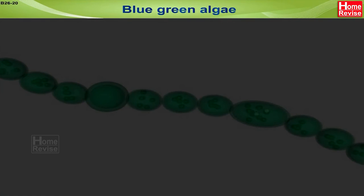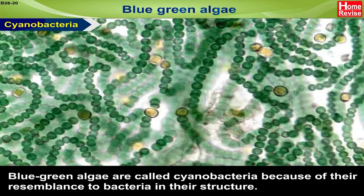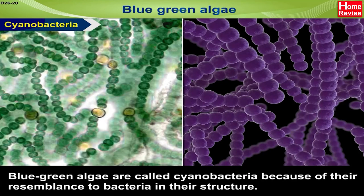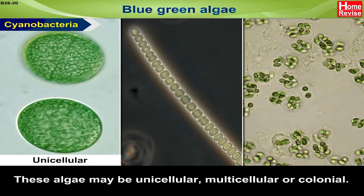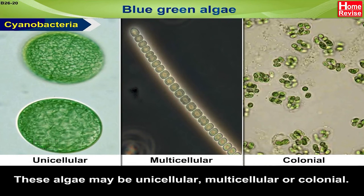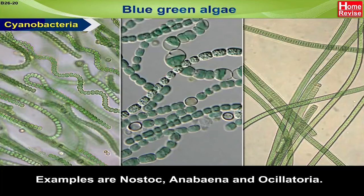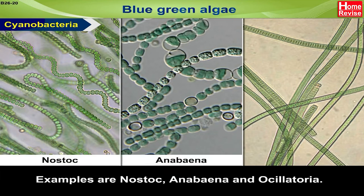Blue-Green Algae. Blue-green algae are called cyanobacteria because of their resemblance to bacteria in their structure. The term 'cyan' refers to their blue-green colour. These algae may be unicellular, multicellular or colonial. Examples are Nostoc, Anabaena and Oscillatoria.